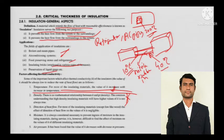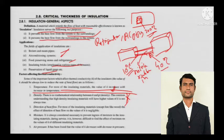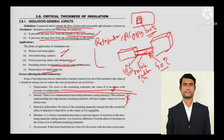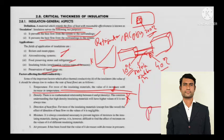Direction of heat flow — for most insulating materials, except fibrous materials like wood, the effect of direction of heat flow on k is negligible. Moisture — it is always considered necessary to prevent ingress of moisture in insulating materials during service. Air pressure — the value of k decreases with decrease in pressure. So increasing temperature increases k, while decreasing pressure decreases k.